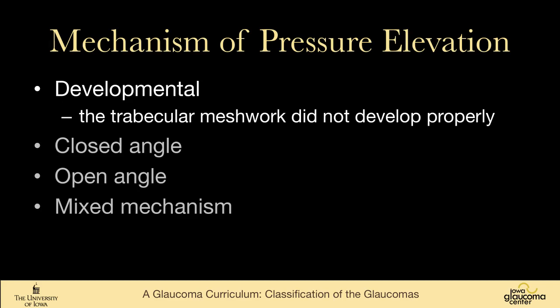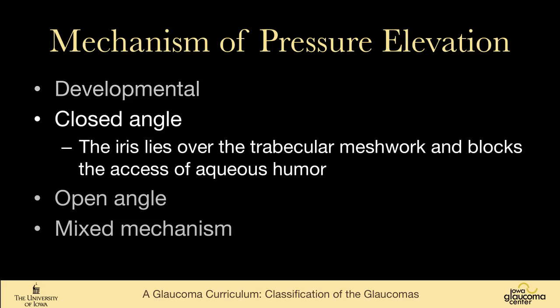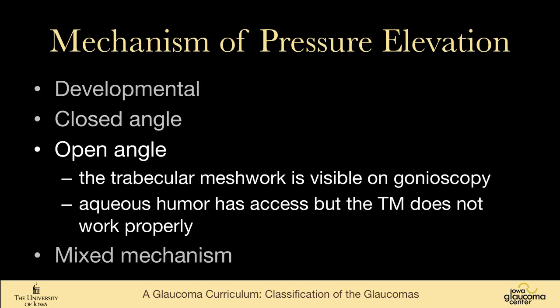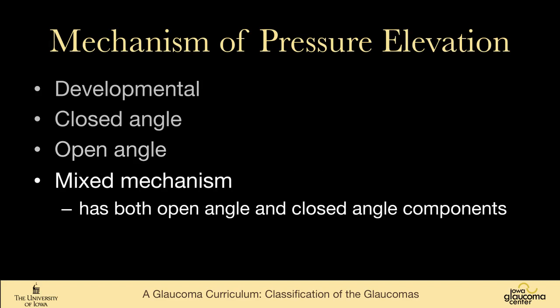In developmental glaucomas like primary congenital, Sturge-Weber, and Axenfeld-Rieger syndrome, the trabecular meshwork did not develop properly and does not work properly. In closed angle glaucoma, the iris lies over the trabecular meshwork and blocks access of the aqueous humor to it. In open angle glaucoma, the meshwork is visible and aqueous can reach it, but the meshwork is not functioning normally. There are also mixed mechanism glaucomas that have both open angle and closed angle components.